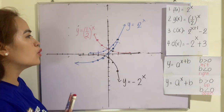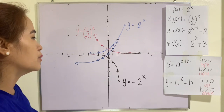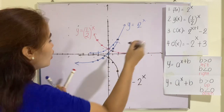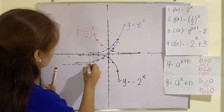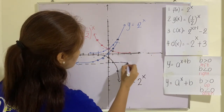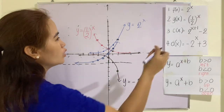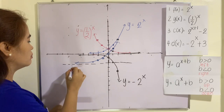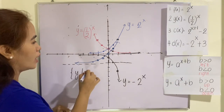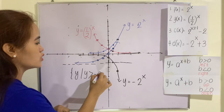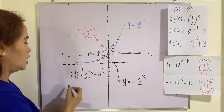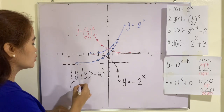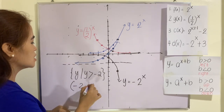Therefore, what will be our range here? This one is asymptotic to y equals negative 2. Therefore, we can conclude that our range will be the set of all y such that y is greater than negative 2. So in interval notation, this is negative 2 up to positive infinity.